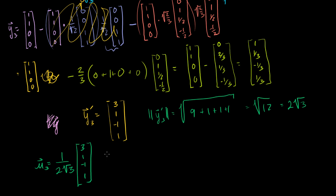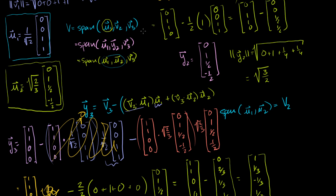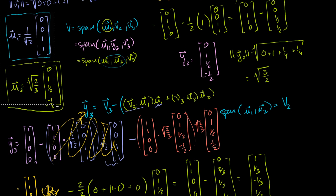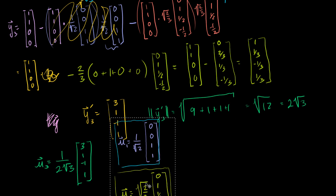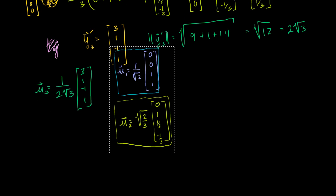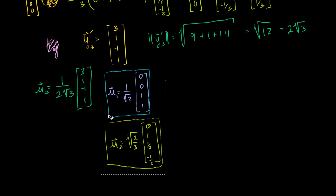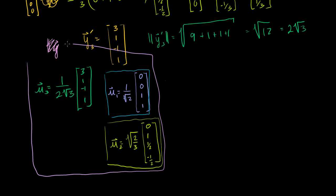And then we're done. We now have an orthonormal basis consisting of U1, U2, and U3. That collection of three vectors forms an orthonormal basis for the original subspace V that we started with.